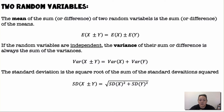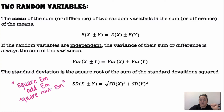The standard deviation of the combined variable is the square root of the sum of the individual standard deviations squared. So I square each standard deviation, add them together, then take the square root.